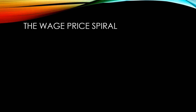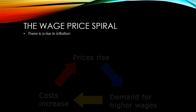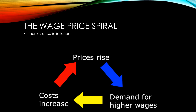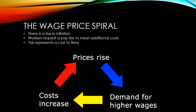The wage price spiral works like this. First, there is a rise in the general level of prices. This means the cost of living has gone up for workers, and they demand higher wages. When firms have to pay these higher wages, it increases their costs, and they respond by raising their prices. You can see we have a vicious cycle here, which can continue to go on, creating more and more inflation. If it's not brought under control, the wage price spiral can have serious negative consequences for an economy.